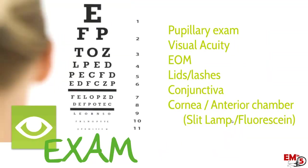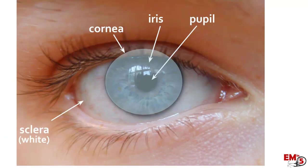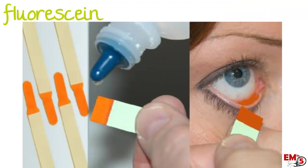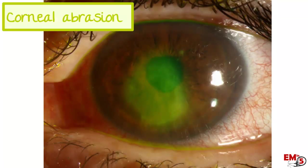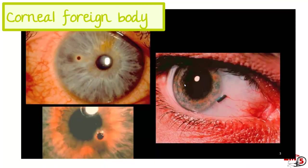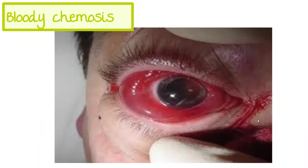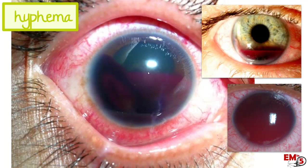Now let's identify the anatomy and look at abnormal findings in the other structures: the cornea, the sclera and conjunctiva, the lids, and the lacrimal system. We use fluorescein and a slit lamp here. The most common finding in trauma is a corneal abrasion — you can see fluorescein uptake over the center — and also look for signs of foreign body. For the sclera and conjunctiva you might see subconjunctival hemorrhage, basically a bruise or burst blood vessel that goes away on its own. Worse swelling is called bloody chemosis, which going all the way around the eye is a higher predictor of more serious injury. In the anterior chamber you might see a buildup of red blood cells called a hyphema, from either blunt or penetrating trauma.